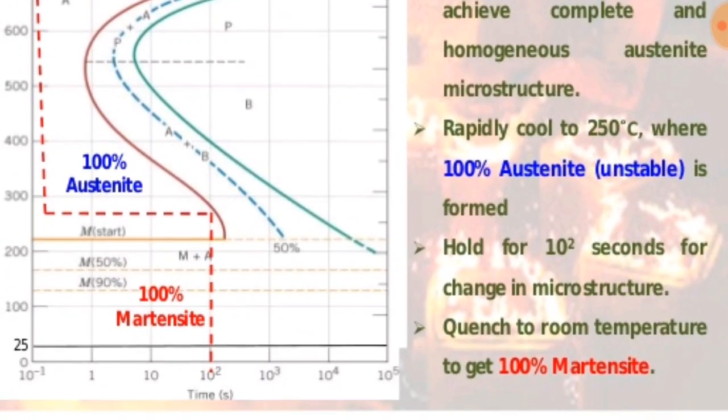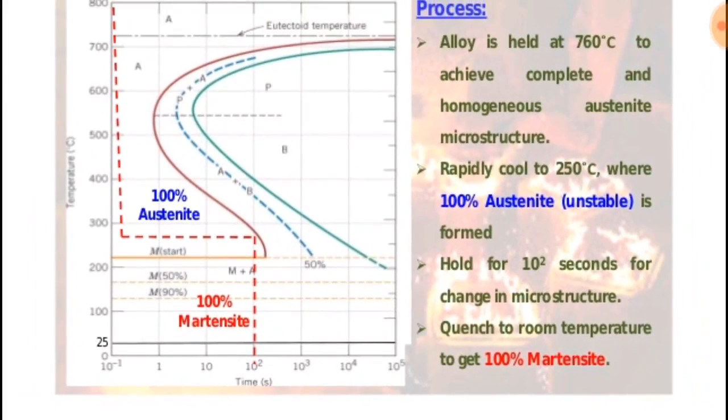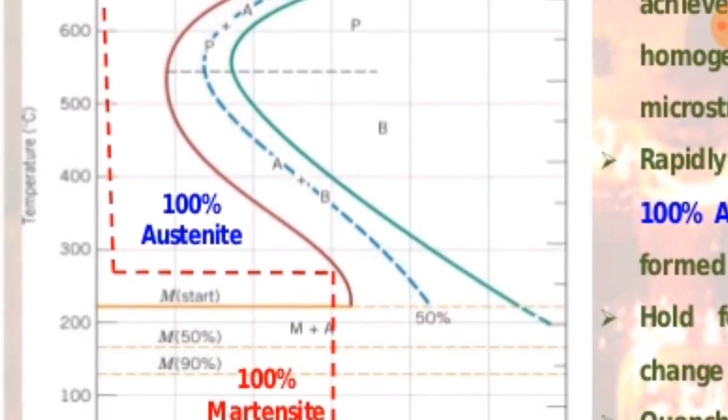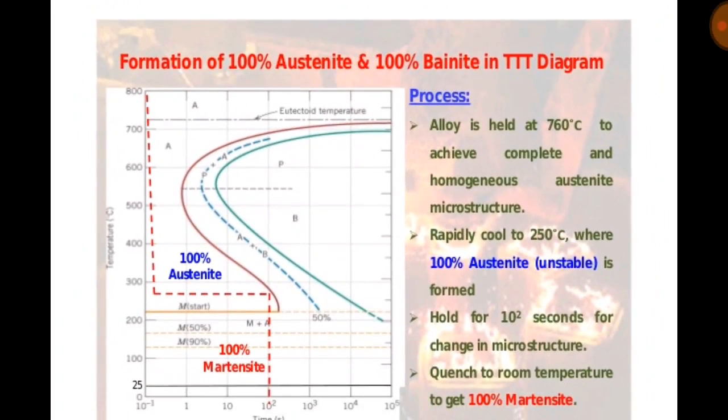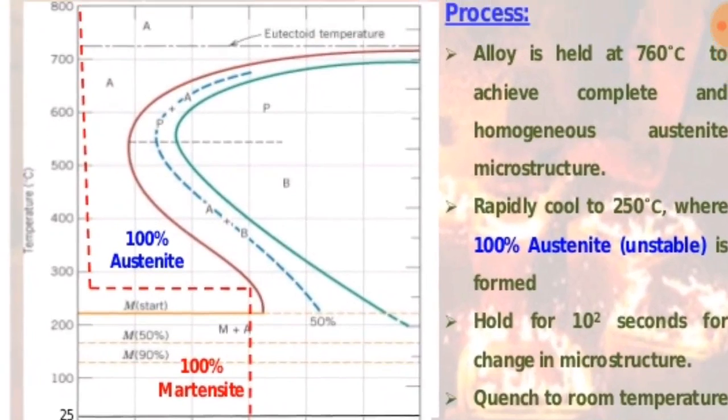Hold for 10^2 seconds for change in microstructure. Quench to room temperature to get 100% martensite. This is the diagram for 100% austenite and 100% martensite.